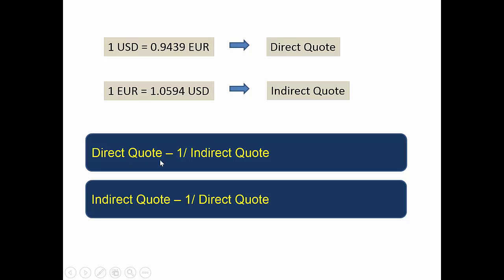Can we say that direct quote equals to 1 divided by indirect quote? For example, 1 USD equals to 0.9439 Euro, so 1 Euro equals to 1 divided by 0.9439. It is just the reciprocal. So direct quote is nothing but 1 by indirect quote, and vice versa — indirect quote equals to the reciprocal of direct quote. Therefore, direct quote multiplied by indirect quote equals to 1. It is simple math.